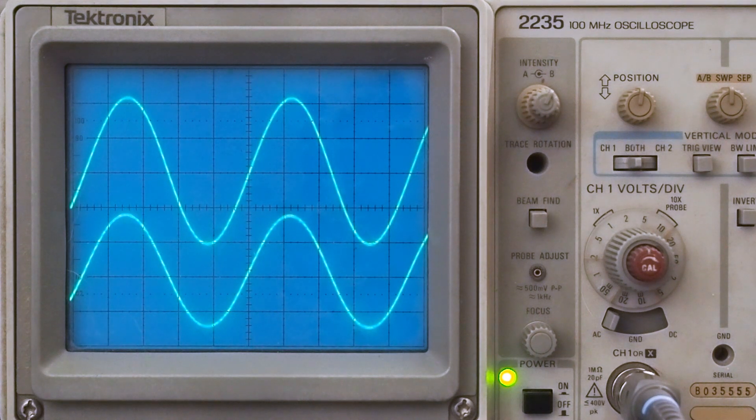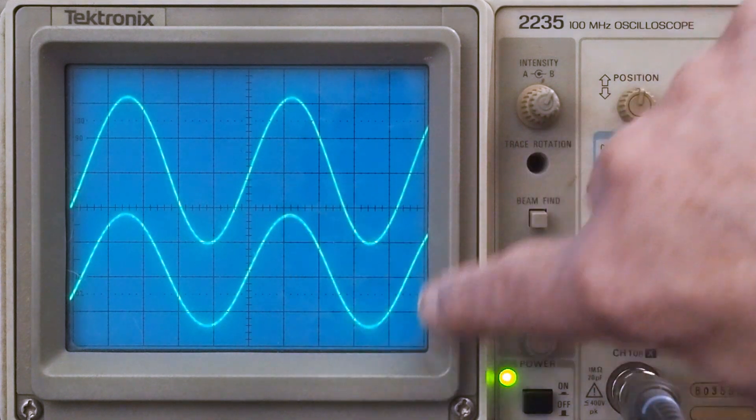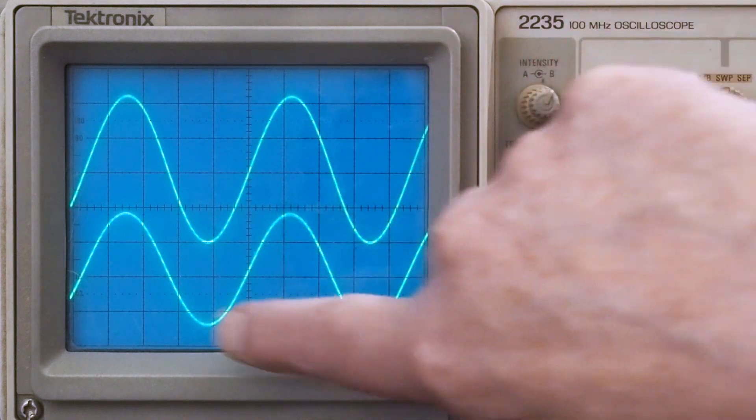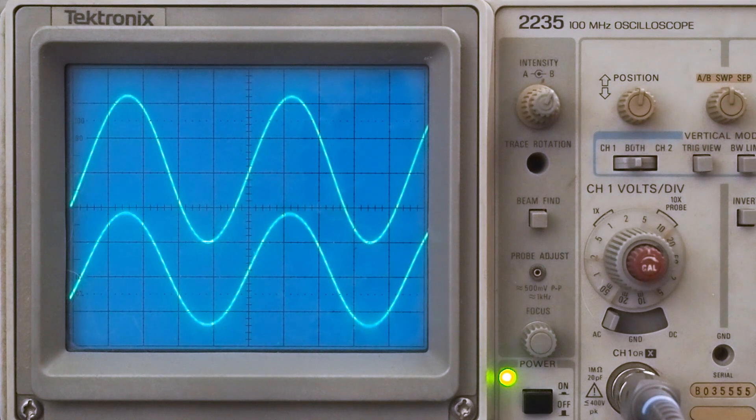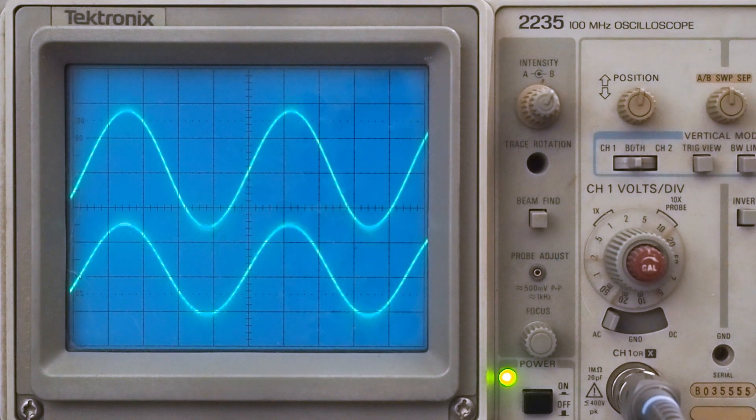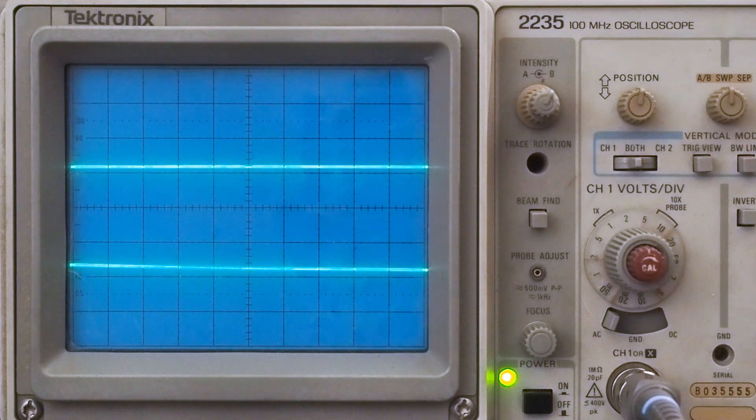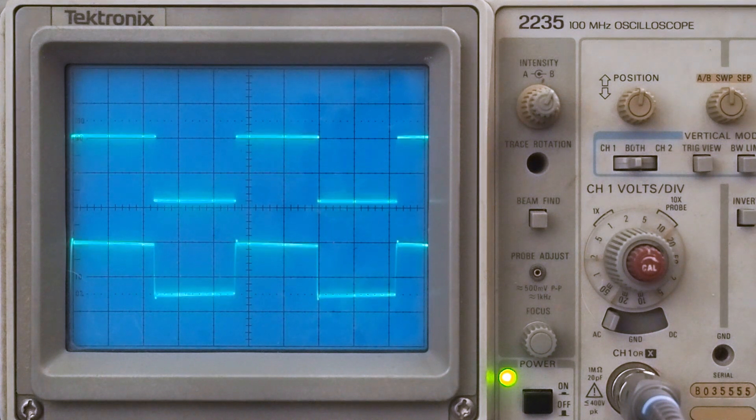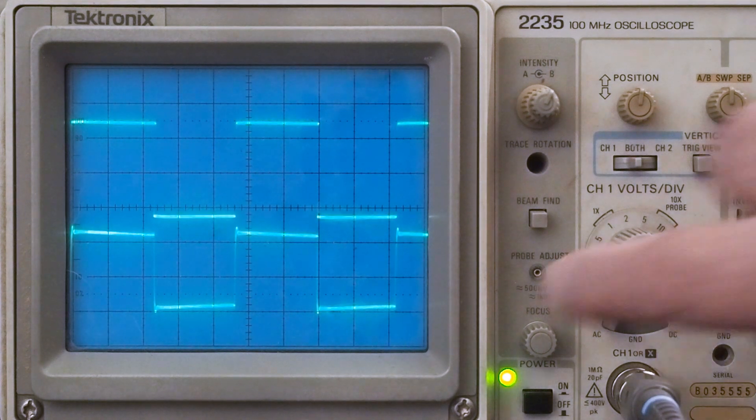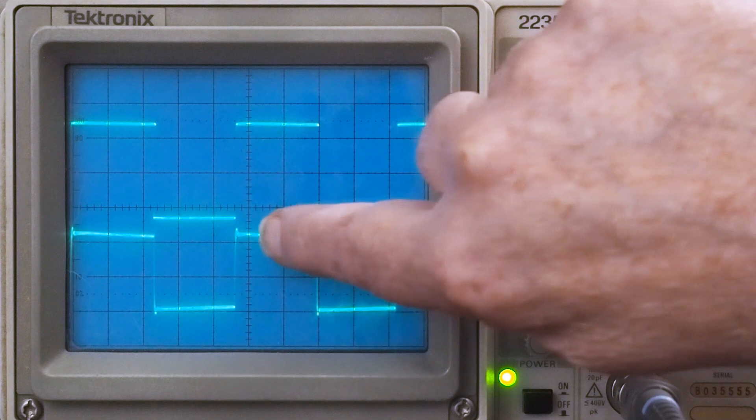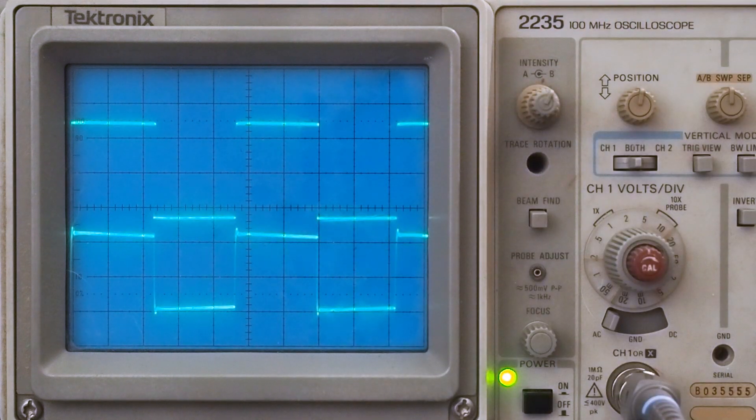Anyway, it looks really clean. If you look at the scope patterns, they look identical. They're not all weird or wonky or anything that would make me think that there's going to be a problem with this amp. And I'm going to switch it over to square wave and take a look at that, see if we see any ringing.